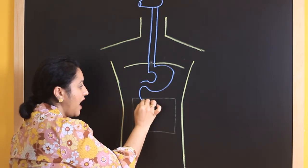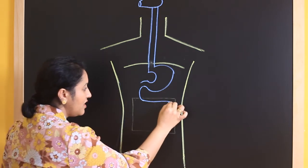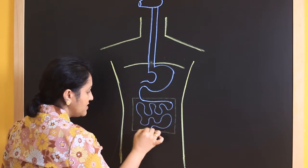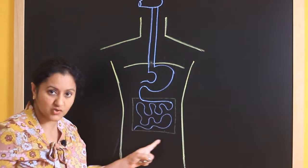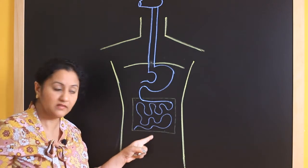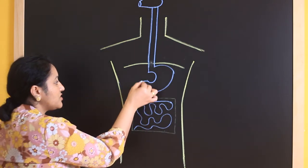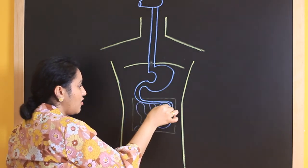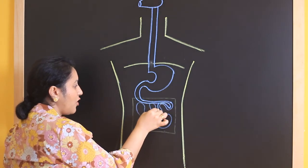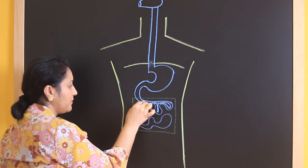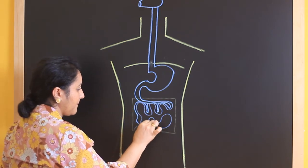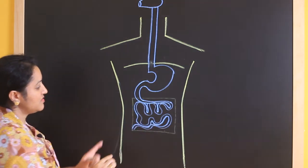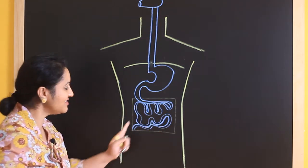So this is C shaped and then comes the jejunum. So now we can do whatever shapes we wanted to give. So we can give all these shapes inside this square. Now the small intestine you can't leave it like that. You need to draw a double line. So continue from here and draw double lines for all these coils that you have given. So the small intestine is compactly arranged inside the square.